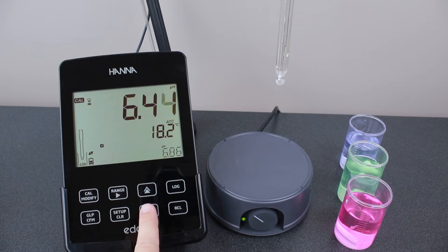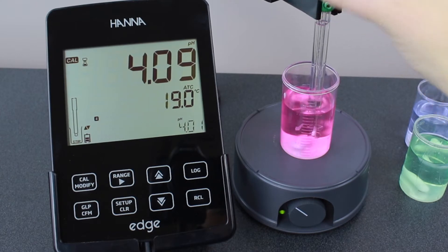By default, the meter asks for pH 7.01 buffer first. Use the arrow keys to move the first calibration point to pH 4.01. Then place the electrode into your buffer.